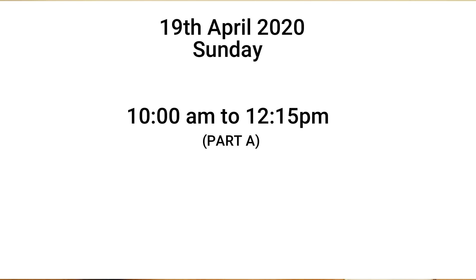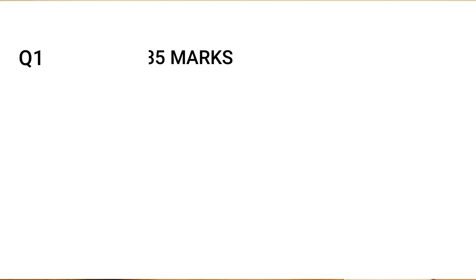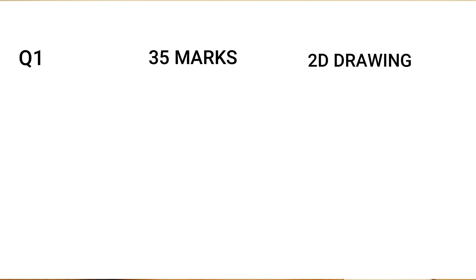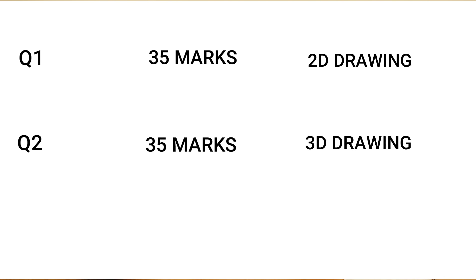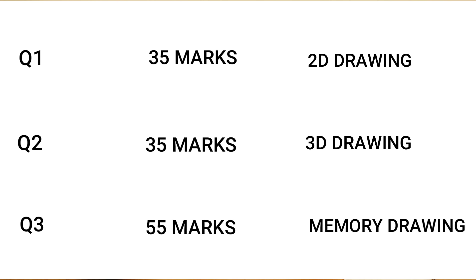Let's look into Part A for now. It is a drawing paper and you will be provided with A4 size paper. The total marks for this part of the paper is 125, divided into three questions. The first question carries 35 marks, which is a 2D drawing question. The second question carries 35 marks, which will be a 3D drawing question. And the third question carries 55 marks and is a memory drawing question.